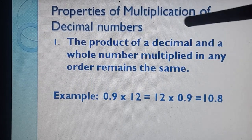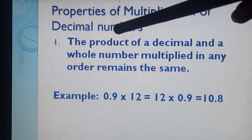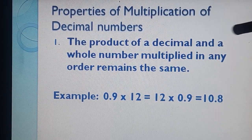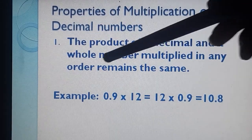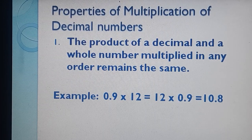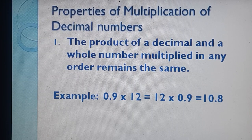Properties of multiplication of decimal numbers. Number 1: the product of a decimal and a whole number multiplied in any order remains the same. Means if we are multiplying a whole number and a decimal number and we are changing the orders, then there is no effect on the product. The product will not change.